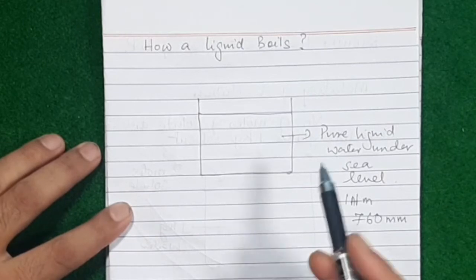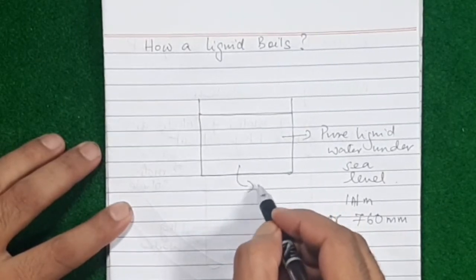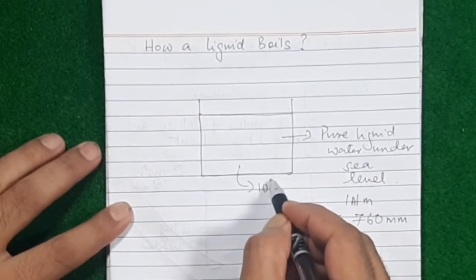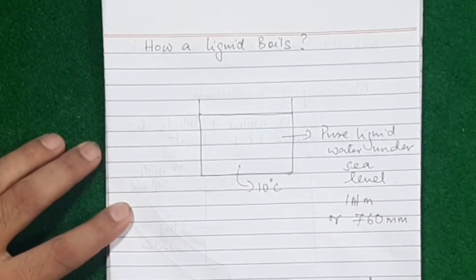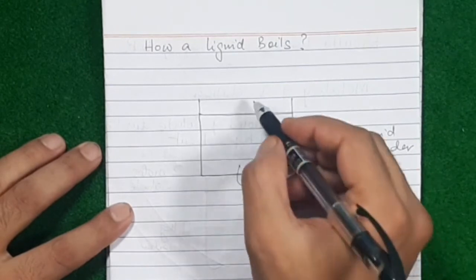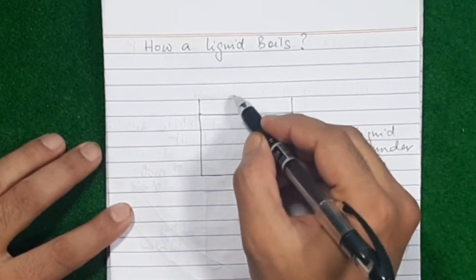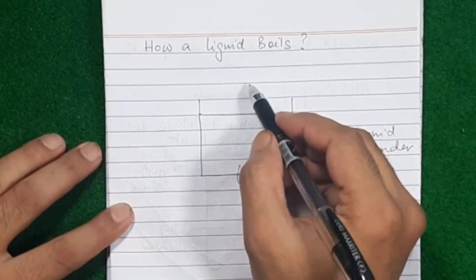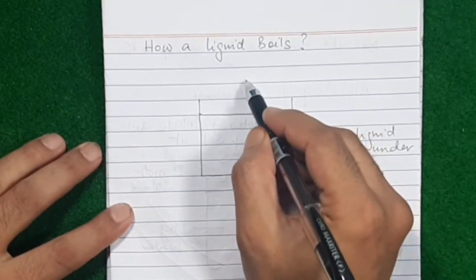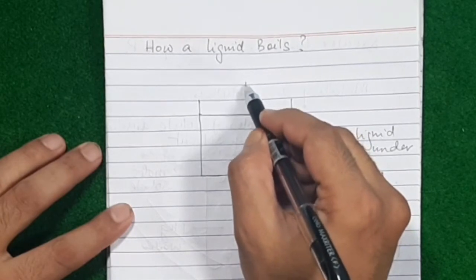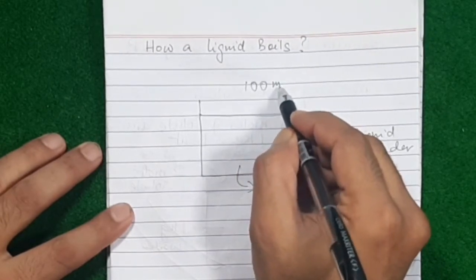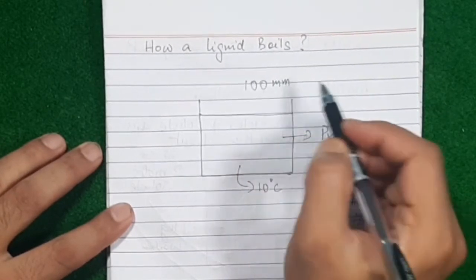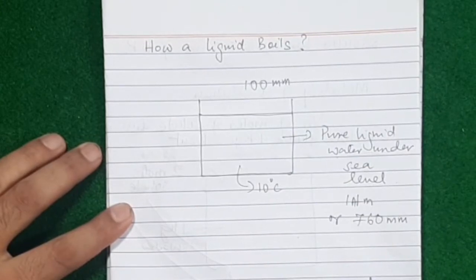This water is maintained at 10 degrees Celsius. Even at 10 degrees Celsius, water can evaporate and forms a small amount of vapor. At this temperature, let's say the vapor pressure of water is around 100 mm.